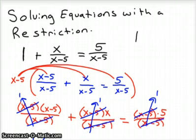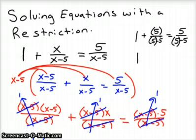And so let's plug in 5 and see what happens. Okay, so we have 1 plus 5 over x minus 5, oh, not x minus 5, 5 minus 5 equals 5 over 5 minus 5. I'm just substituting, I substituted here, here, and here.